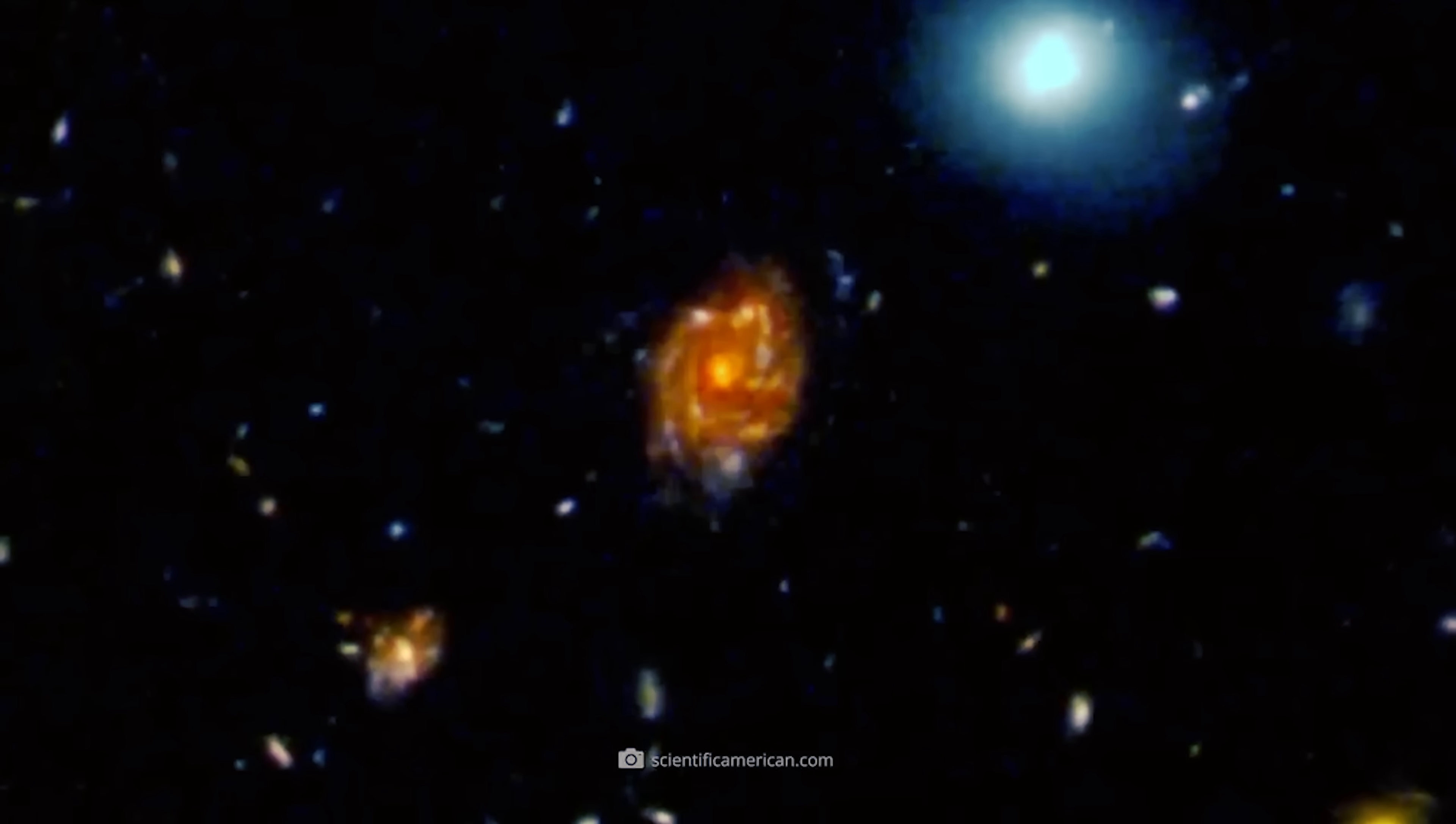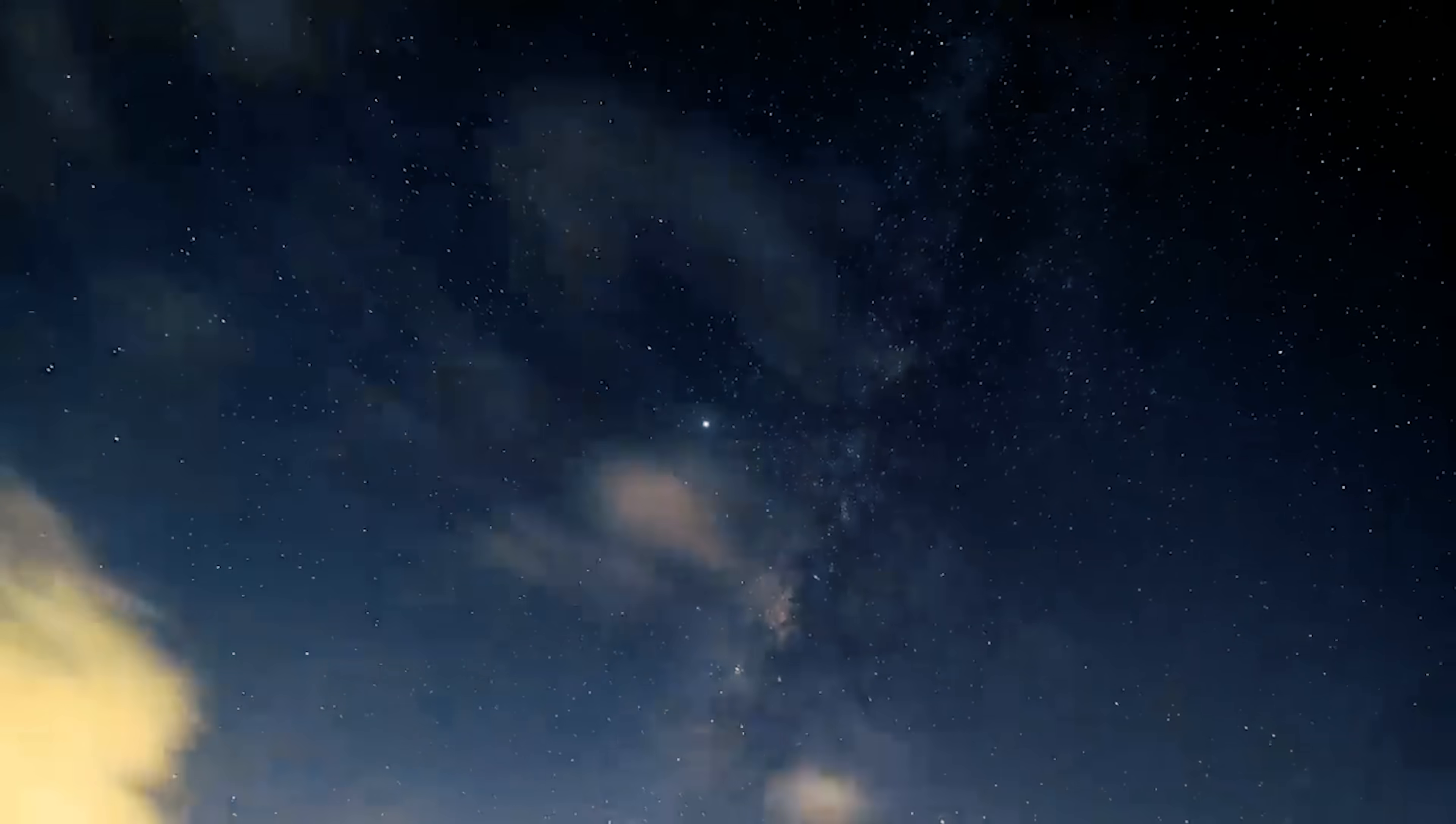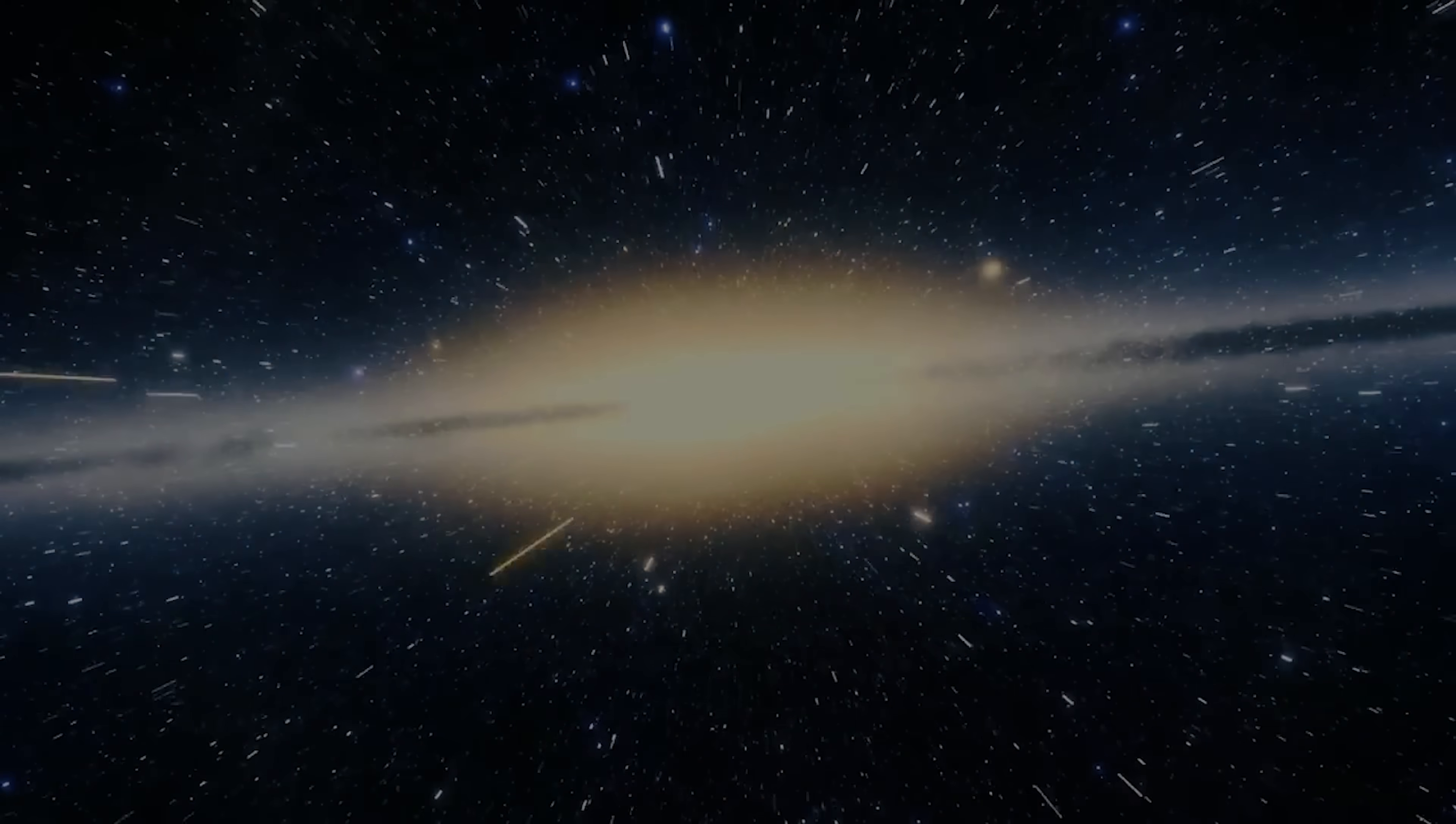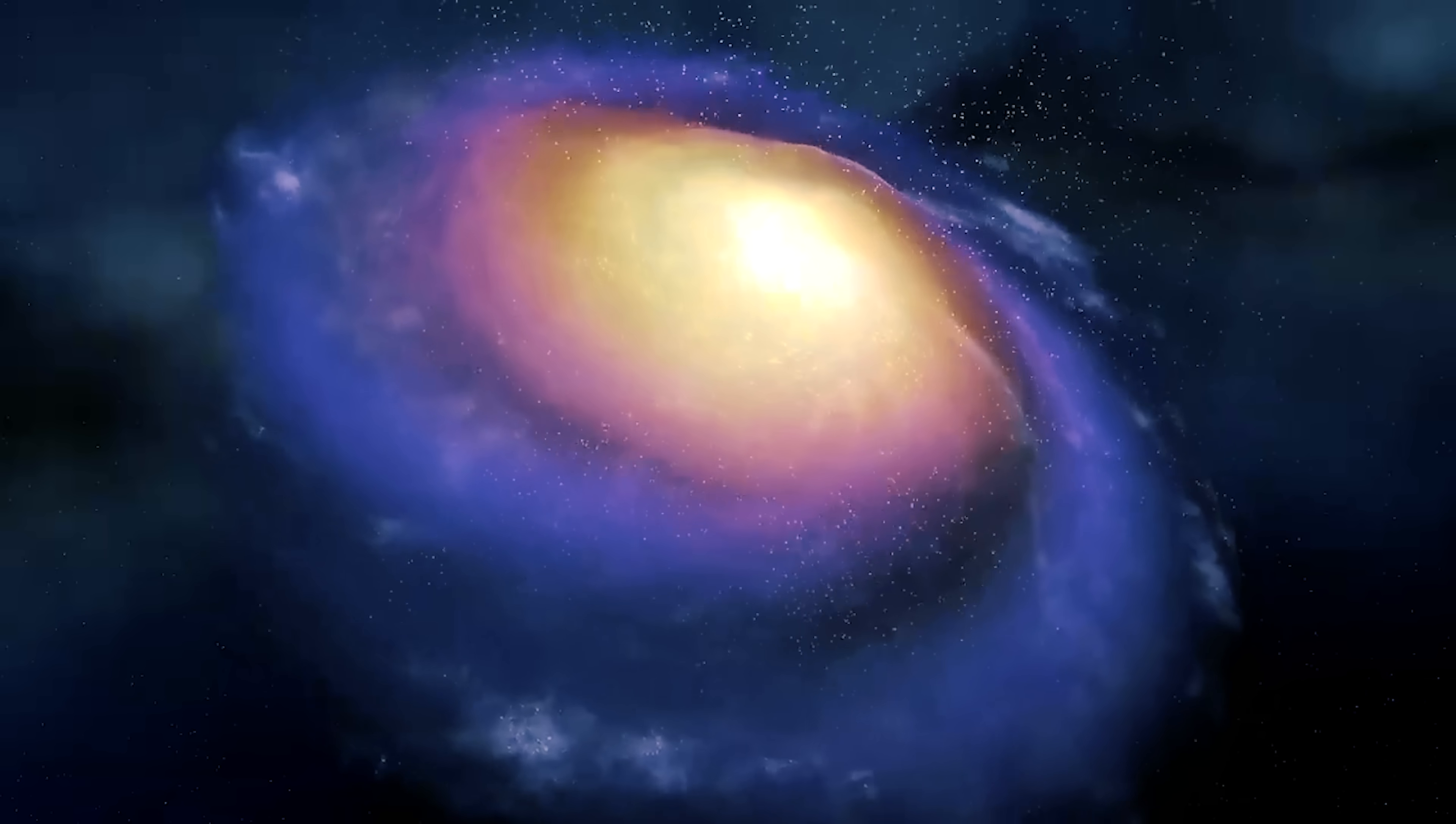That's why the Big Wheel is such a cosmic paradox. It's huge, it's ancient, and it's still perfectly symmetrical. Adding to the puzzle, its growth rate is normal. Not supercharged, not freakishly fast, just ordinary. That shouldn't be enough to make a galaxy this gigantic so early in the universe's history. So how did it pull it off?